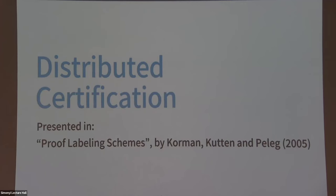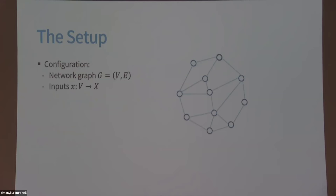So the classical model for distributed certification: the basic setup is a distributed network where every node has some input, and together the network and the input are called the configuration. Since this is a distributed network, every node operates individually, making its own decisions, sending messages, and deciding what to do. Initially, each node knows its own unique identifier, has access to its neighbors and their identifiers, and knows its own input — but only its own input. That's all they know initially.